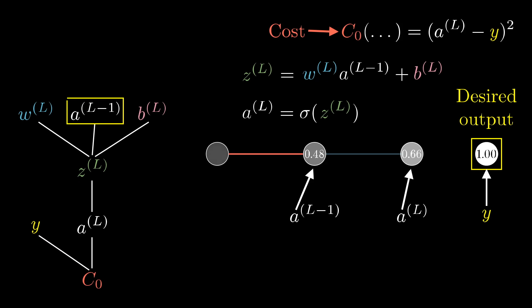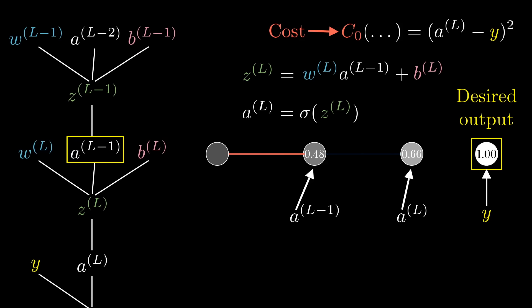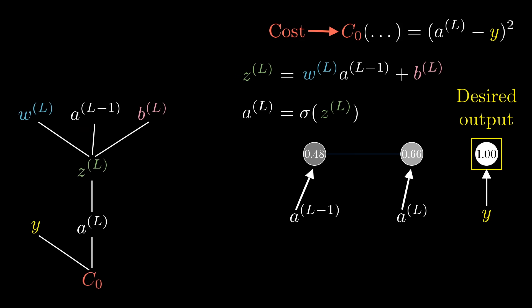And of course a^(l-1) is influenced by its own weight and bias and such, but we're not going to focus on that right now. Now all of these are just numbers, and it can be nice to think of each one as having its own little number line.